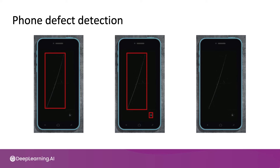But then a third labeler may look at this and say, here's a bounding box that shows you where the defects are. Between these three labels, probably the one in the middle will work the best. But this is a very typical example of inconsistent labeling that you will get back from a labeling process with even slightly ambiguous labeling instructions. If you can consistently label the data with one convention — maybe the one in the middle — your learning algorithm will do better.